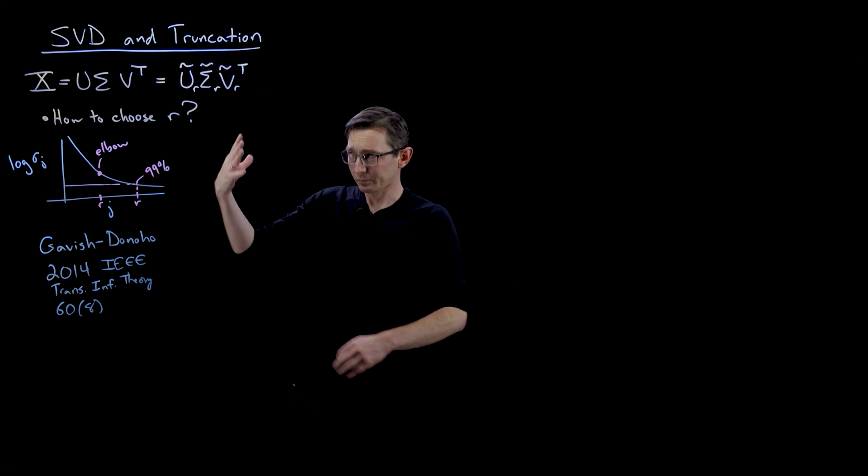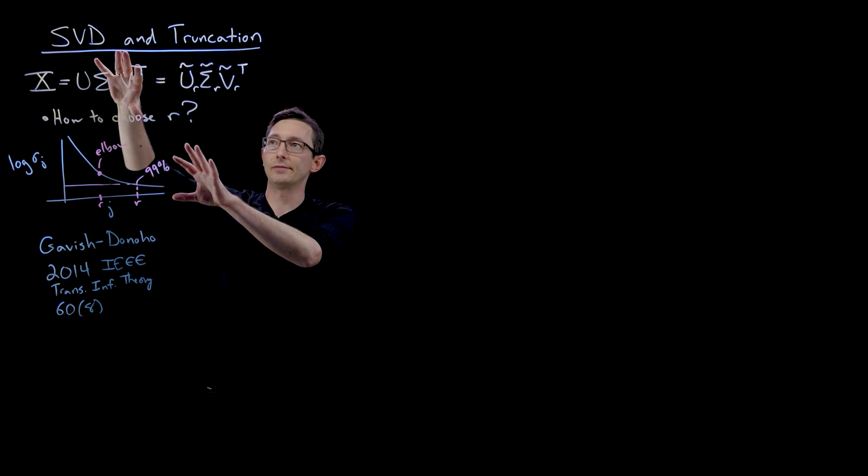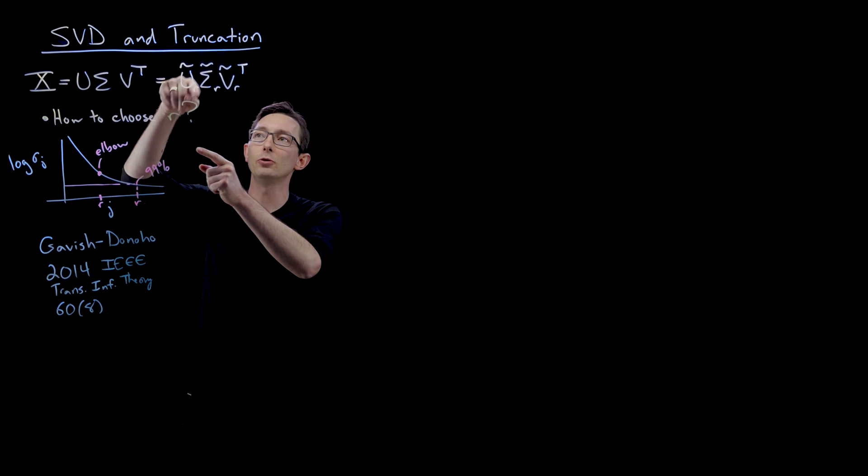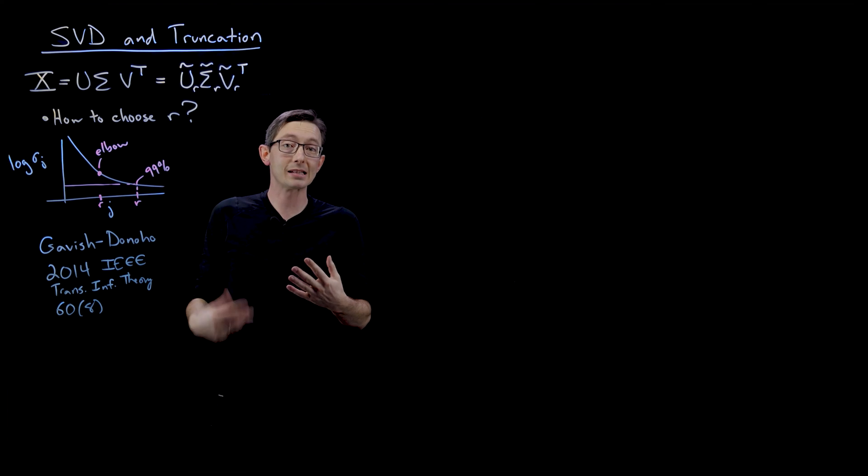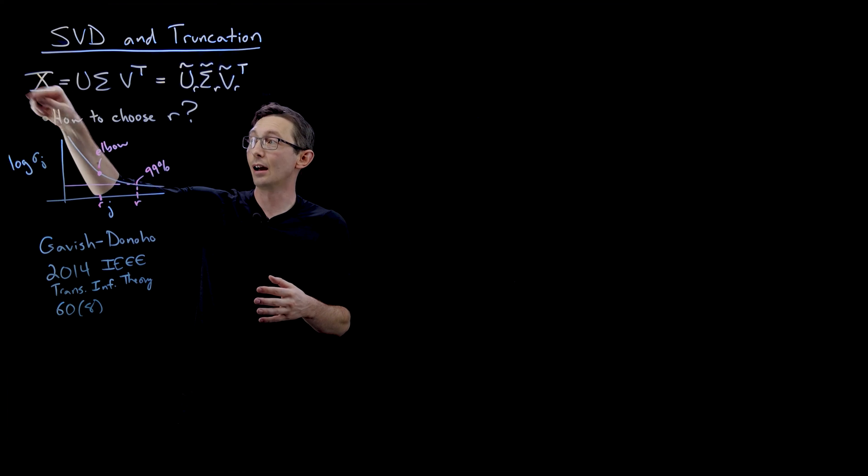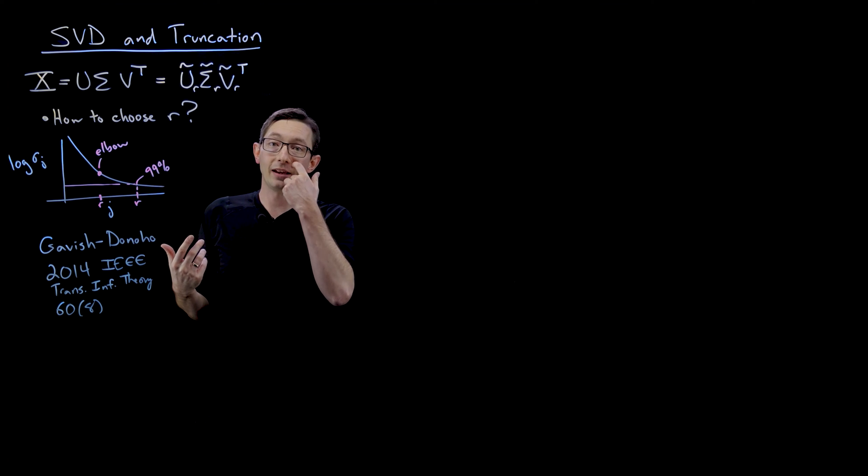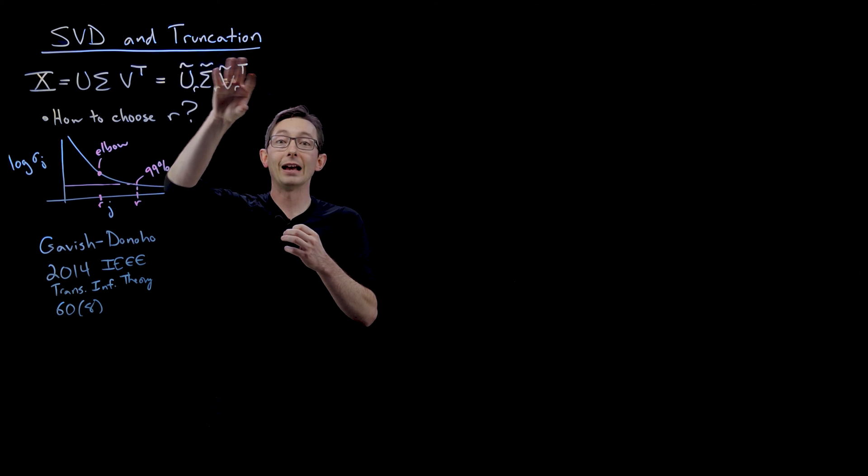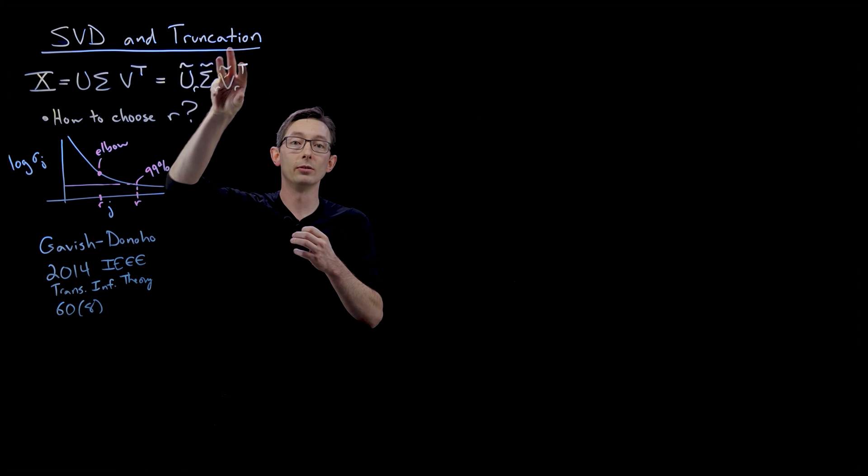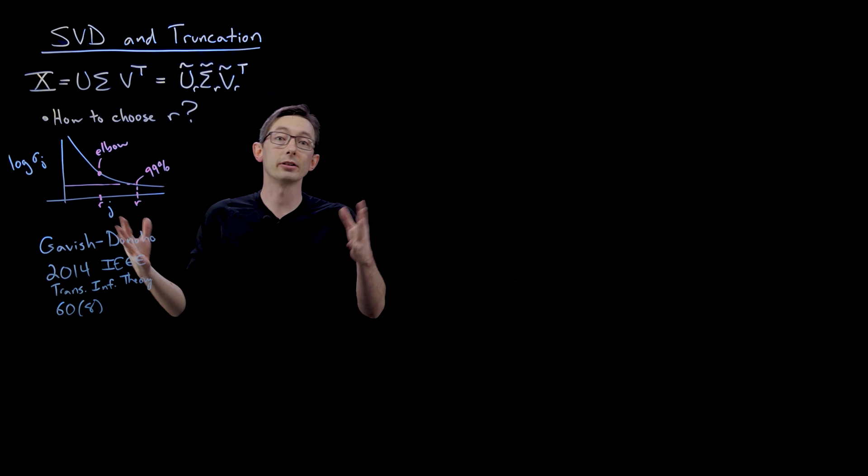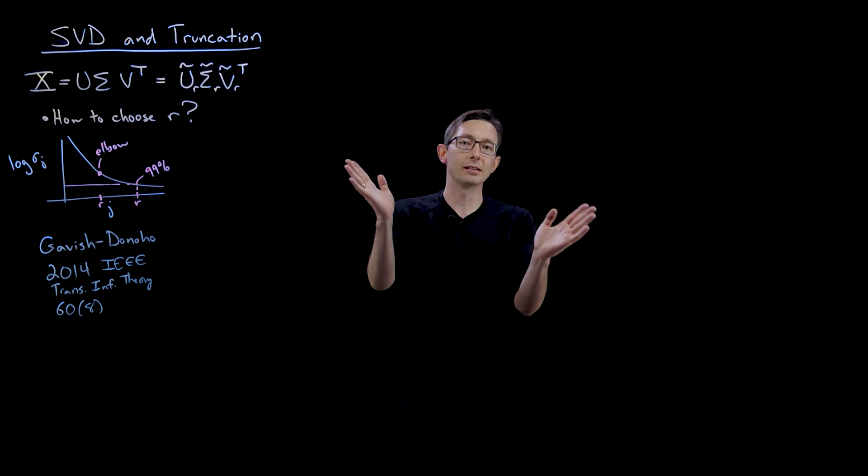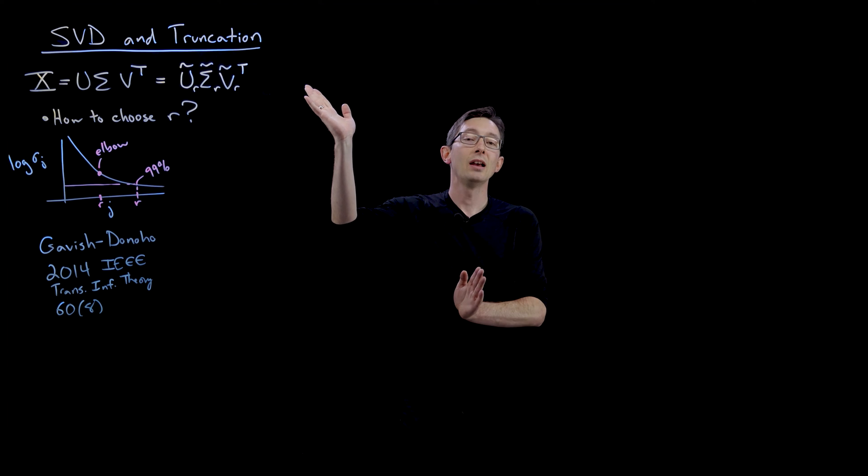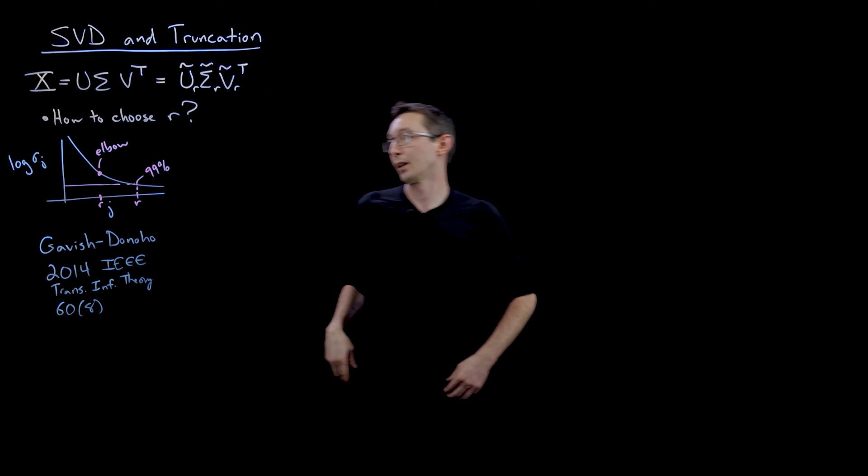And remember, we want to truncate this SVD because we want to have as few modes given by the columns of u and v as possible to describe the data in x. And so if I can get away with finding five informative columns of u and v as opposed to 500, that would be great. So I want r. So there's always this balance in modeling between complexity and accuracy.